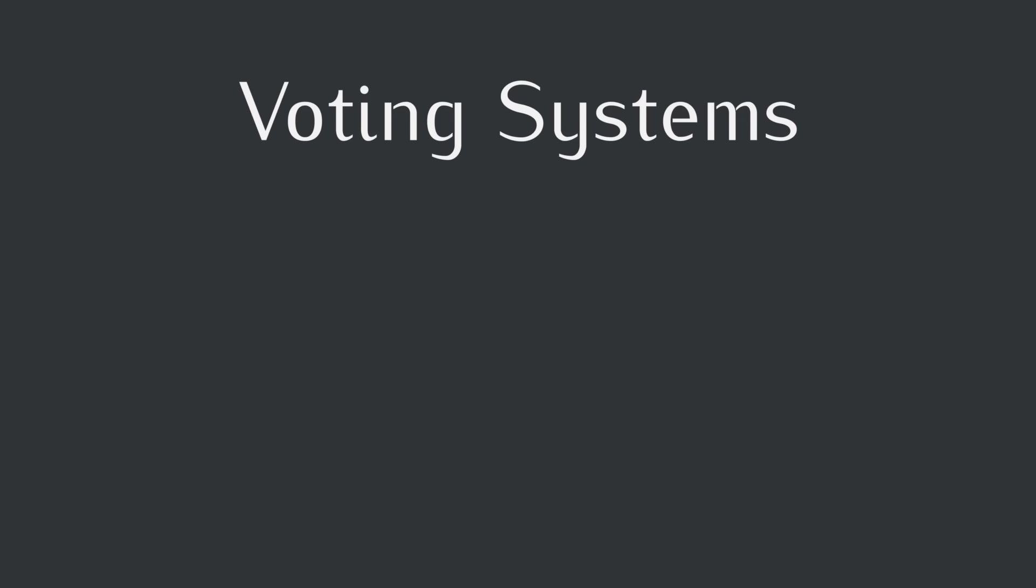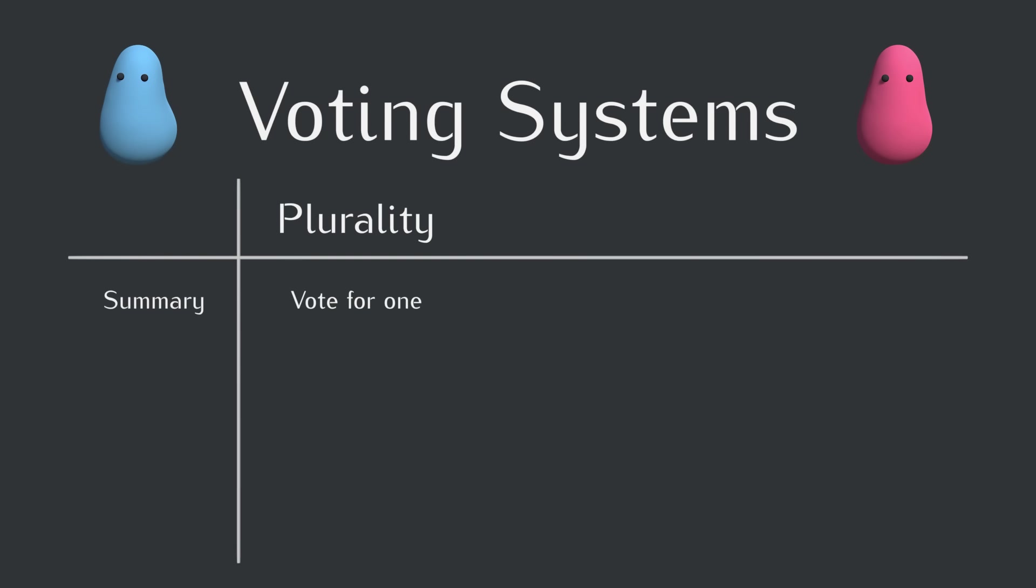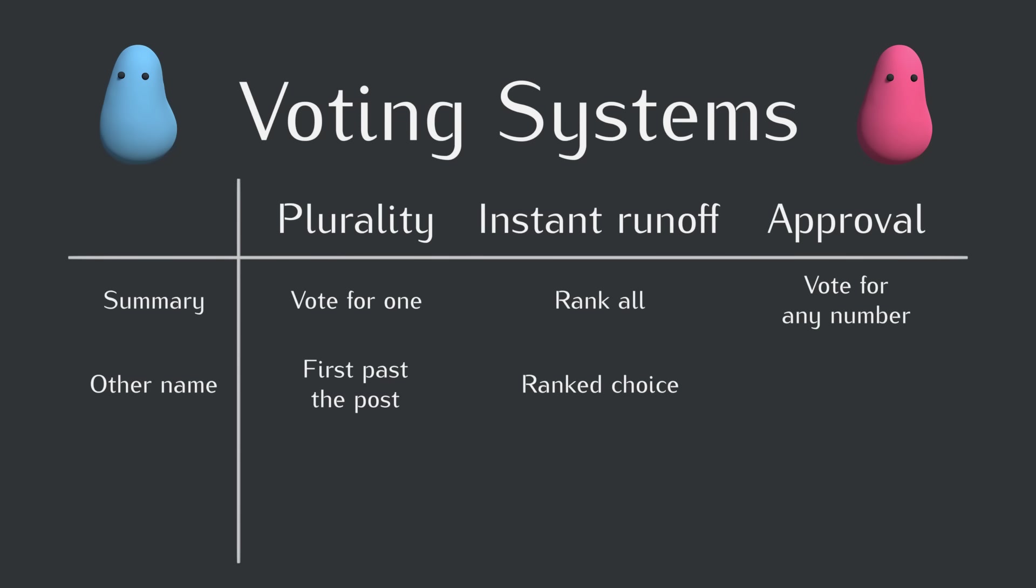Okay, so here are the three voting systems we're going to look at. First, there's plurality voting, where every voter votes for exactly one candidate. This is also called first-past-the-post. I'm honestly not quite sure why it's called that, but apparently it's a reference to horse racing. Second, we have instant runoff voting, sometimes called ranked-choice voting, where each voter ranks the candidates from best to worst, and then those rankings are used to eliminate one candidate at a time. And finally, there's approval voting, where each voter can vote for as many candidates as they want. Each of these systems will have a flaw and a voting strategy related to that flaw, and we'll fill those in as we go.